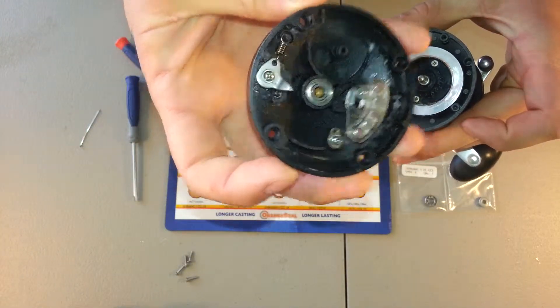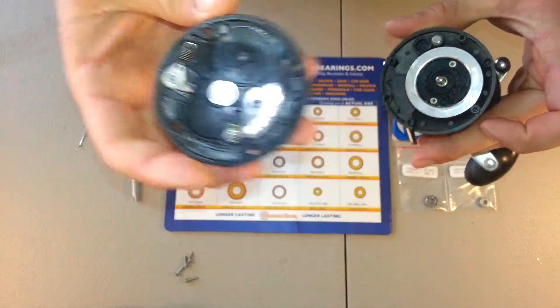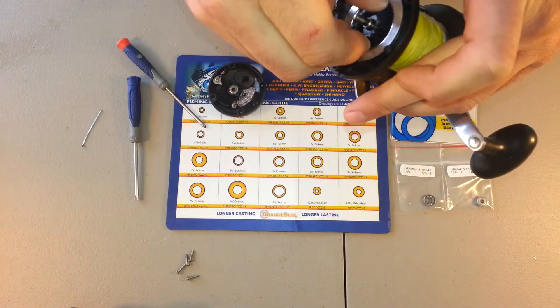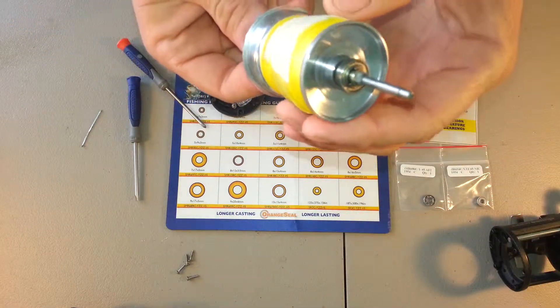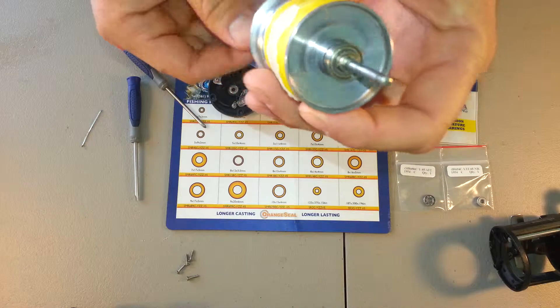One of the bearings is right there in the side plate. Remove the spool out of the reel, and the other bearing is right here on this side plate.